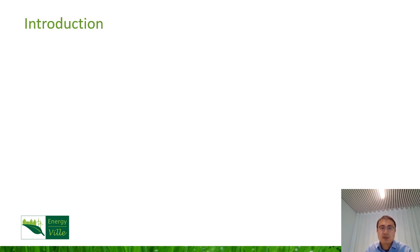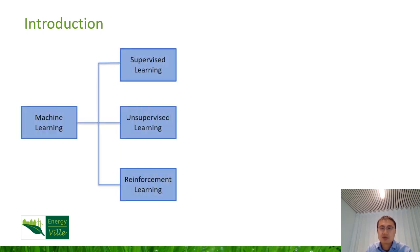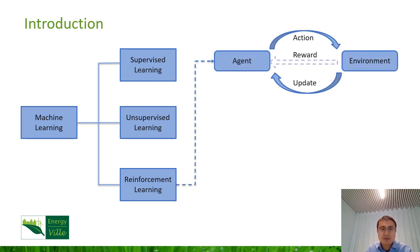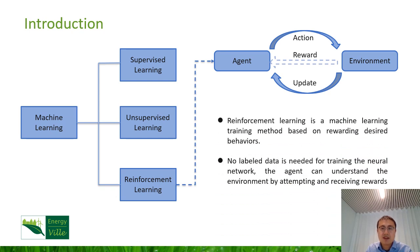Reinforcement learning is one major branch of machine learning, other than supervised learning and unsupervised learning. The idea of reinforcement learning is to allow the computer to train itself by interacting with the environment, and in the meantime, adjusting its decisions based on rewards, and finally finding the optimal scheme to achieve the goal. So we can see that reinforcement learning is a machine learning training method based on rewarding desired behaviors. One of the major advantages is that no labeled data is required for training. The agent can understand the environment by attempting different actions and receiving rewards. On the other side, the definition of environment and rewards are very important for reinforcement learning.